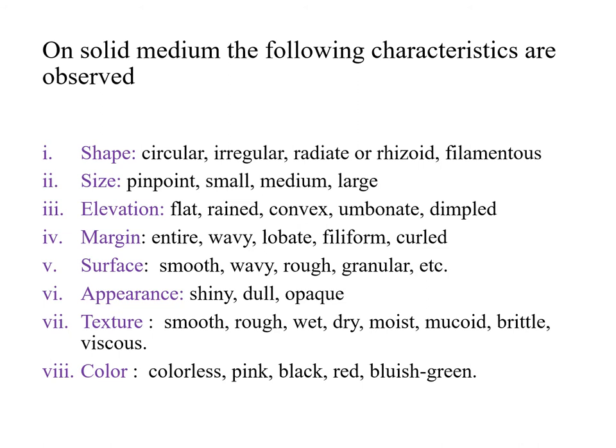What are the characteristics we look at in colony morphology? We look at the shape of the colony, the size — which varies from pinpoint to large — the elevation, the margin, and the surface, whether it's smooth, wavy, rough, or granular. We also look at the appearance: is it shiny, dull, or opaque? We look at the texture and the color as well, because certain bacteria give different colors — bluish-greenish might be specific for Pseudomonas aeruginosa, and golden color is specific for Staphylococcus aureus.